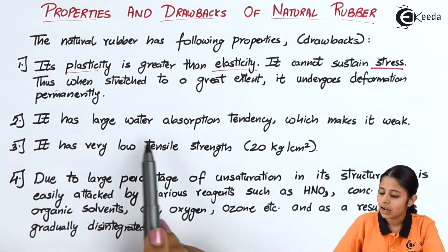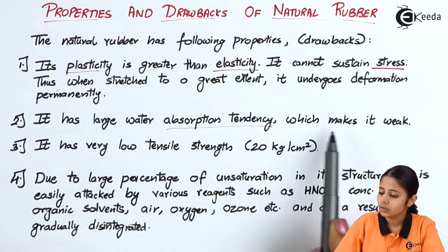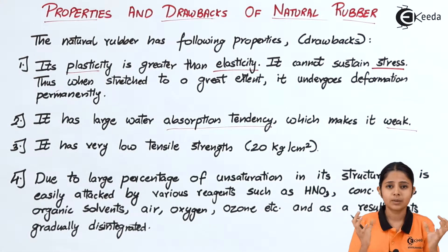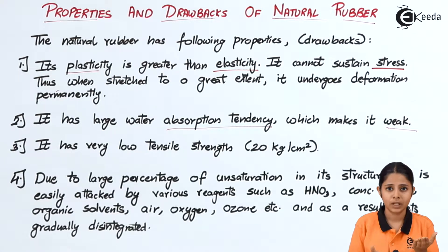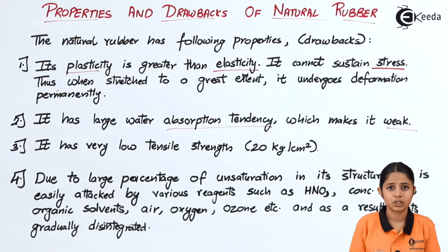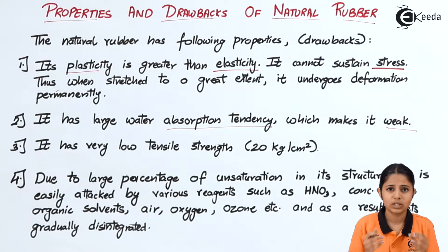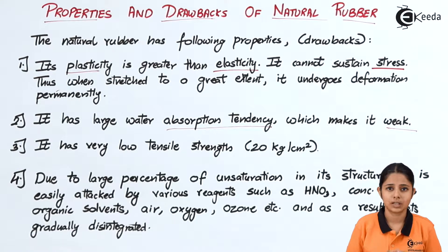Point number two: it has a large water absorption tendency which makes it weak. If I take rubber in a humid atmosphere, it starts absorbing water and the water content inside that rubber material becomes very high. Because of the high water content, the physical and chemical properties of that rubber will be degraded. A proper rubber should not absorb any water — if placed in a tub of water, water will seep inside and change its physical and chemical properties, which is not desirable.